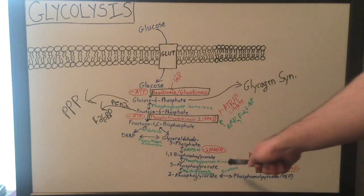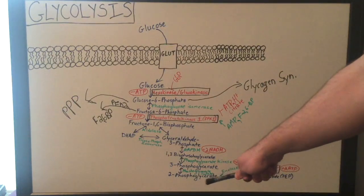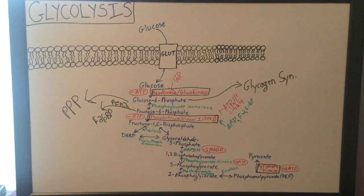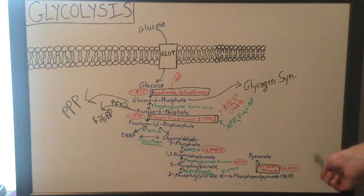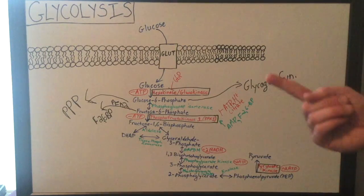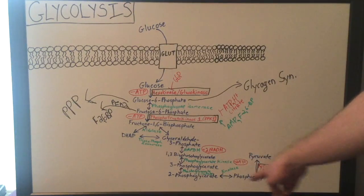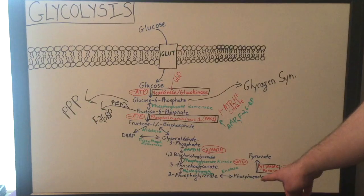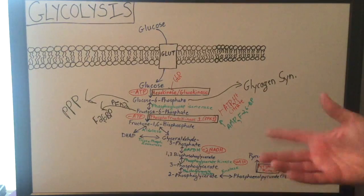Once you get 3-phosphoglycerate, it'll be converted into 2-phosphoglycerate by a mutase reaction. Then 2-phosphoglycerate will actually be converted into phosphoenolpyruvate (PEP) via the enzyme enolase. Then phosphoenolpyruvate will actually be converted into pyruvate via the enzyme pyruvate kinase. This will also get you another 1 ATP per pyruvate formed, but since there are two parallel reactions proceeding, you'll have two phosphoenolpyruvates and two pyruvates being formed — so you get two ATP out of it.